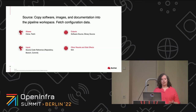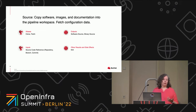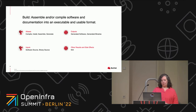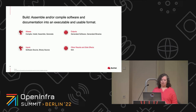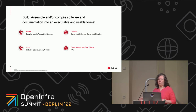Then you have your source step where you copy your software, images, and documentation into the workspace and fetch your configuration data — sometimes called clone or fetch. For this step you need to know what source code management repository, branch, or commit you're going to pull in, and as outputs you get your source files in the workspace. Then in the build step you assemble and/or compile your software and documentation into some executable, usable, and testable format — this might be called compile, install, assemble, or generate. The inputs are the software source and binary source, and outputs are your generated software and binaries.